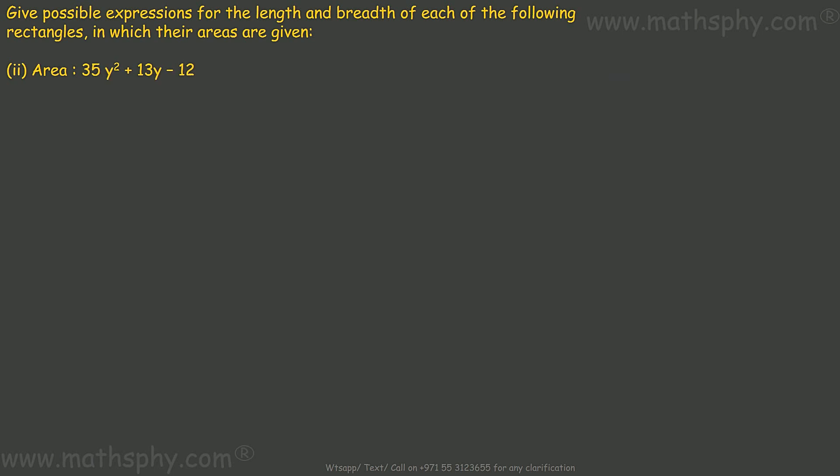Alright, this one here. Again, same thing I have to do, 35y squared plus 13y minus 12. Let's try to break its middle term, means a plus b should be 13y, and a into b should be 35 into 12, which is 420y squared.